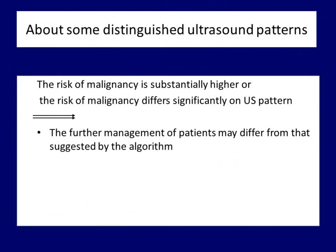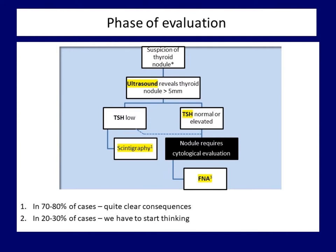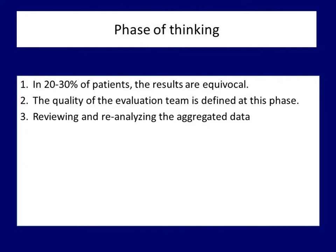To summarize the previous part of the presentation: if we went through the suggestions of the algorithm, it is a mistake to believe that we got a clear solution in each case. Unfortunately not. In fact, in a lot of cases we have to start thinking here. In up to one third of patients, the situation is not clear after the patient went through the process. The quality of decisions in these 20 to 35% of patients defines the quality of the evaluation team. We should overview all possible data — reviewing and re-analyzing the aggregated data is the main tool for decision, and one of the most important data points is the ultrasound pattern.